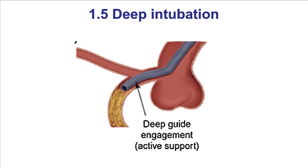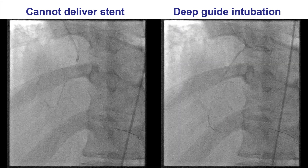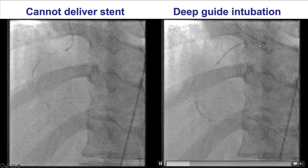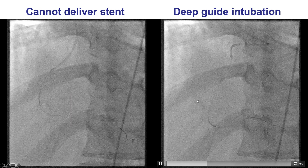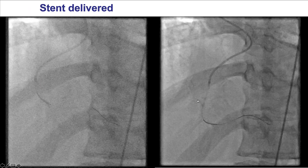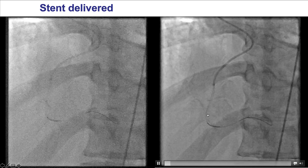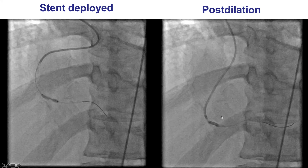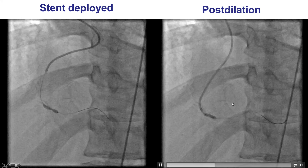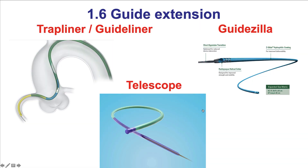The fifth way is to deeply intubate the guide catheter. This is an example of difficulty delivering in the right coronary artery with clockwise rotation. We see the guide is actually being deeply intubated into the right coronary artery — eventually almost all the way down to the lesion. That facilitated delivery of balloons and stents with a nice final result, both before and after. The guide is essentially all the way down to the distal right coronary artery.